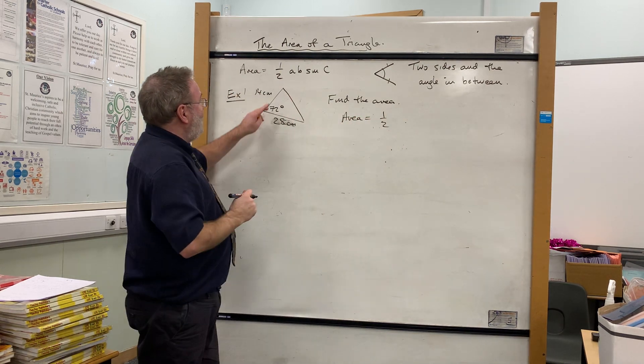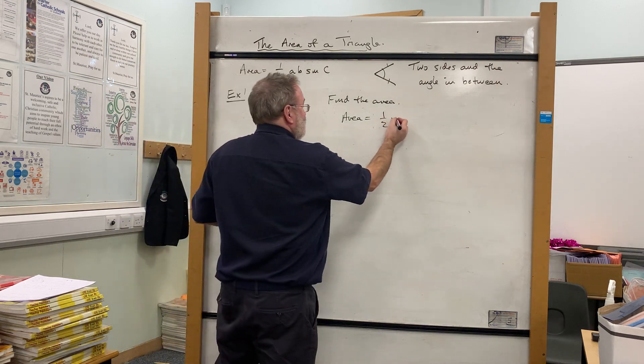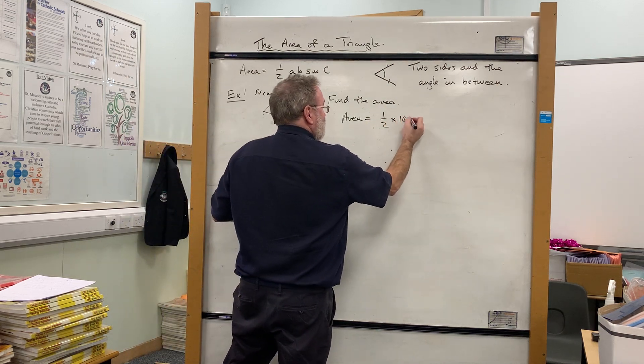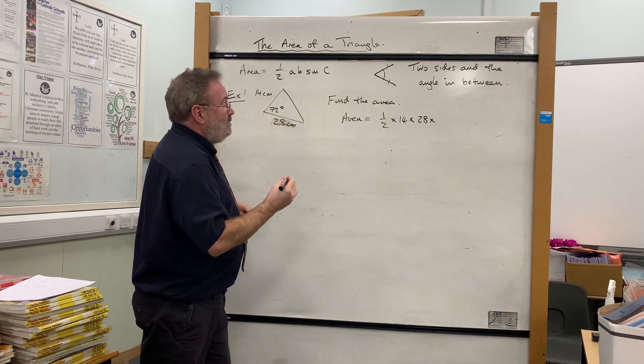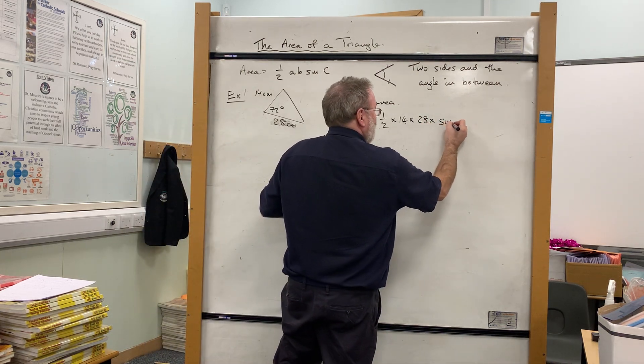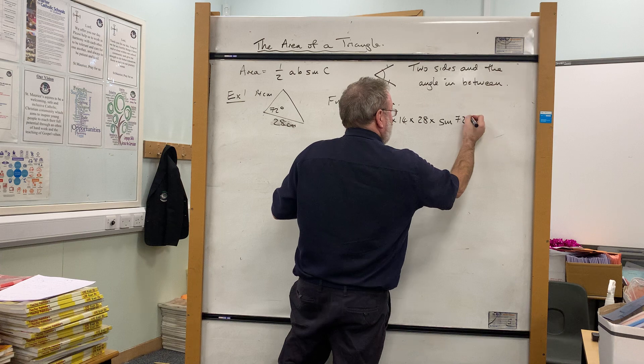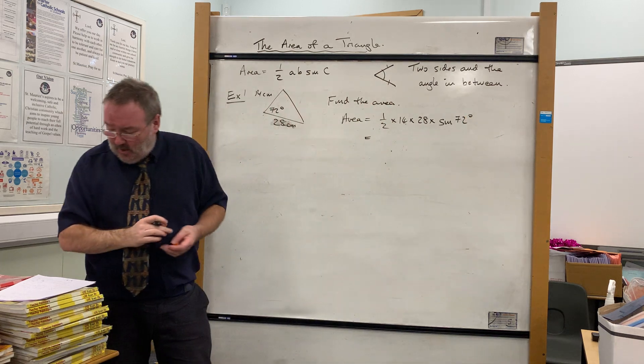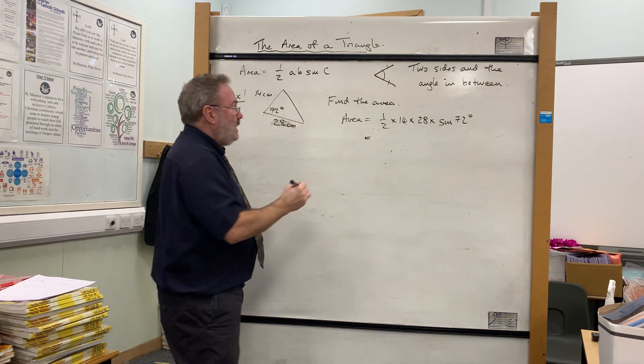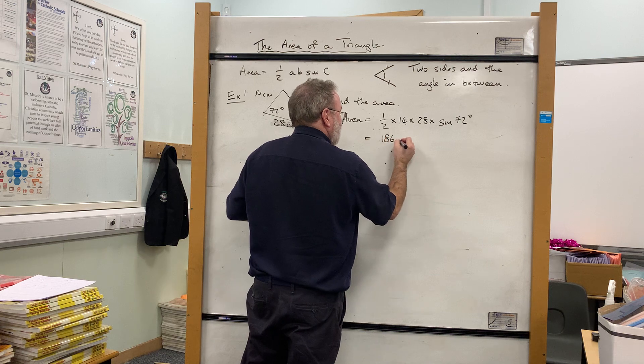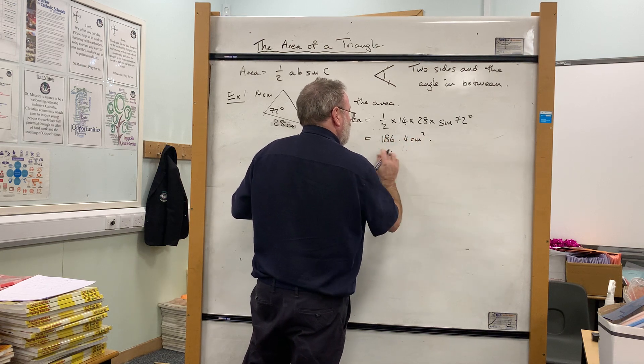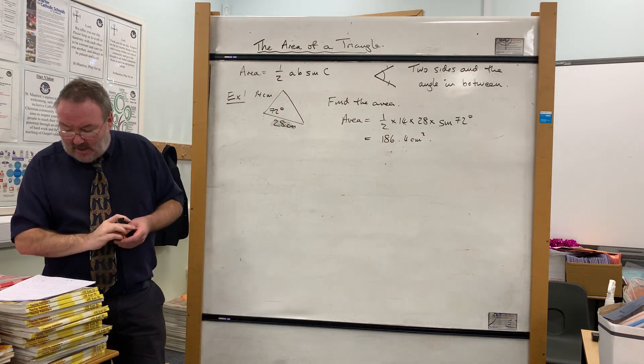So you don't even need to write down the formula, you just need to be aware of it. So it's a half times the two sides, 14 times 28, and then times the sine of 72 degrees. Now if we calculate that out very simply, it comes out at 186.4 square centimeters. Do that, double check that you get that answer.